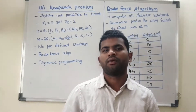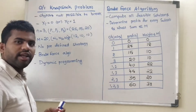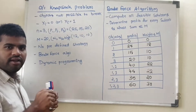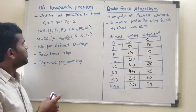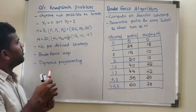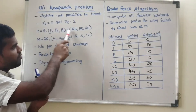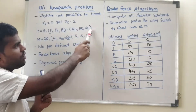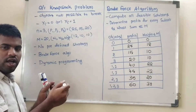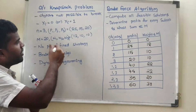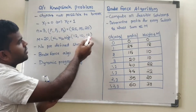In the 0/1 knapsack problem, objects are not possible to break into parts. You can include an object, but if you are including it, you have to include it fully. If you are not including it, you make it zero inclusion. We will take an example where N equals 3 — total possible objects are 3. Profit weights P1, P2, P3 are 25, 15, and 20. M is the maximum weight of the knapsack, so you can fill the bucket up to a maximum weight of 20. The weights are 12, 10, and 10.